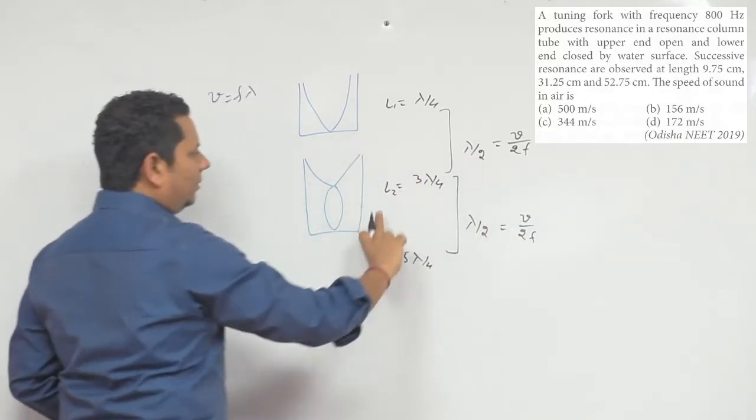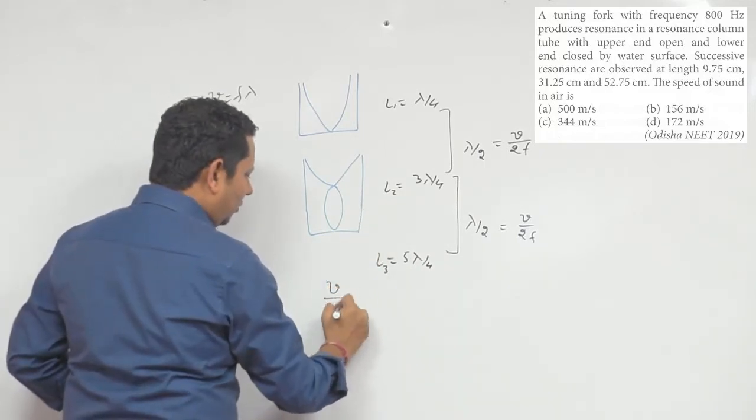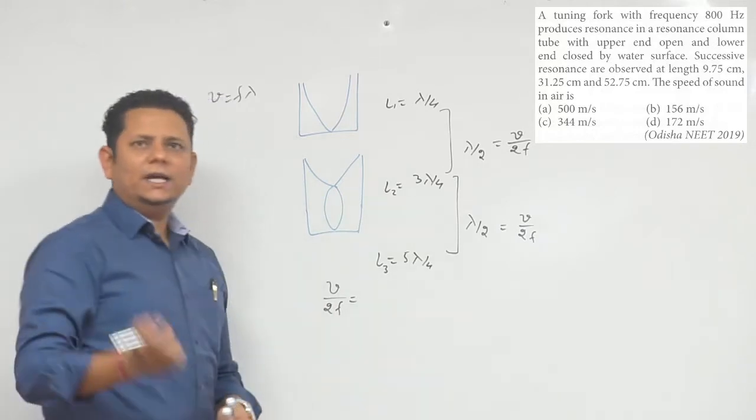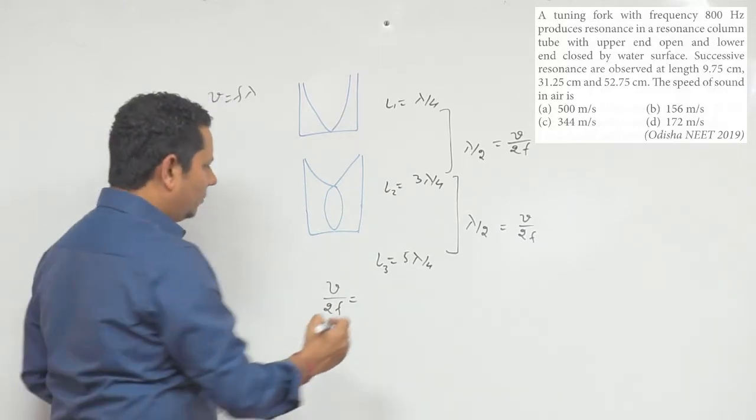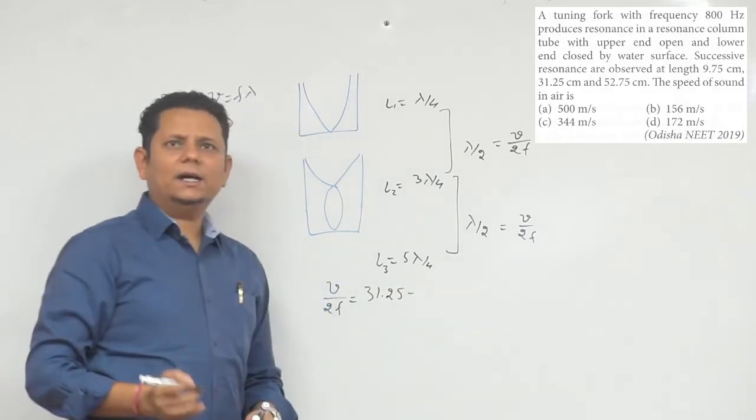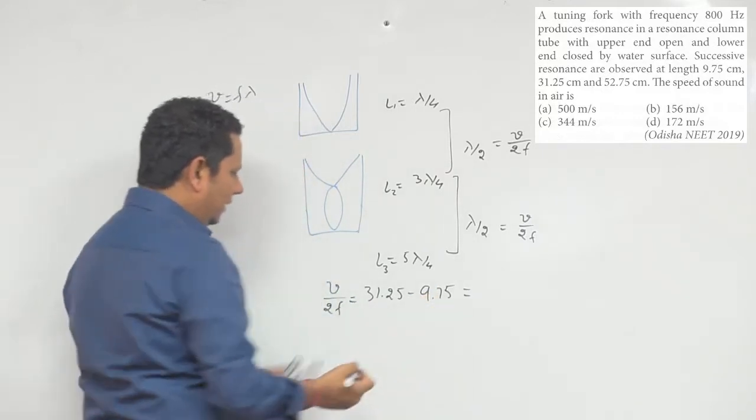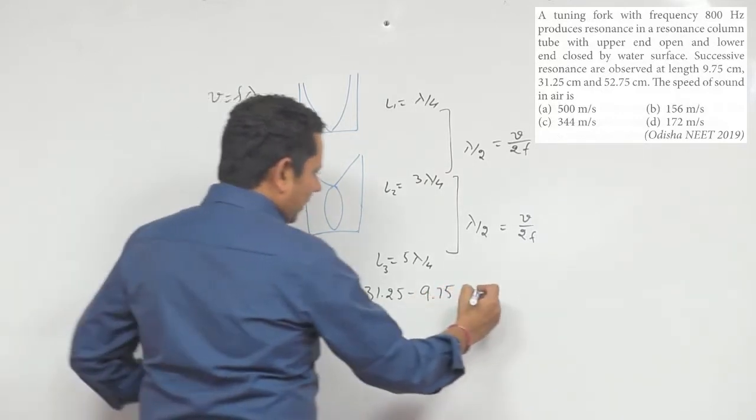The difference between the first two and next two that we've noted, this means v divided by 2f will equal the difference between these two, which is 31.25 minus 9.75.